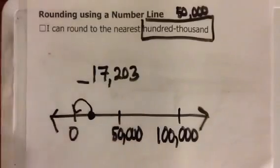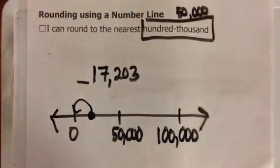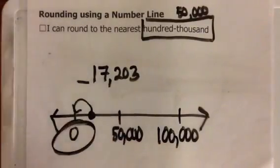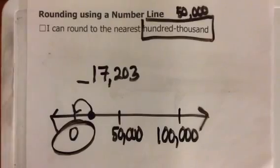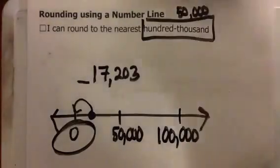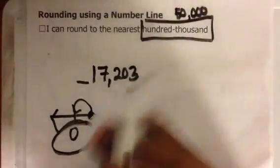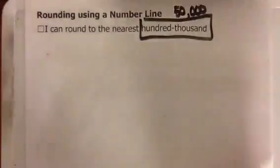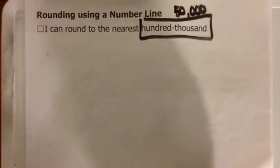And I can see that seventeen thousand two hundred three is closer to the benchmark zero. Therefore, seventeen thousand two hundred three rounded to the nearest hundred thousand is zero. You might want to say zero hundred thousand, but that doesn't sound right.